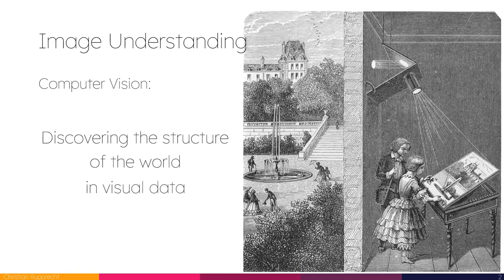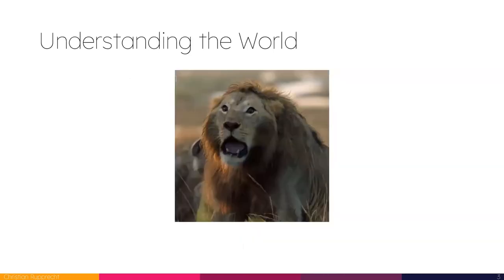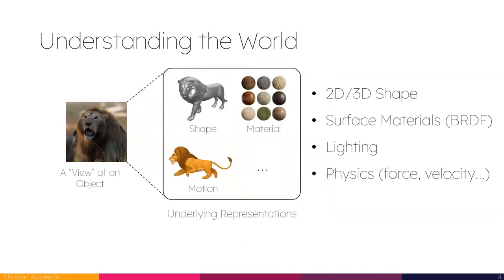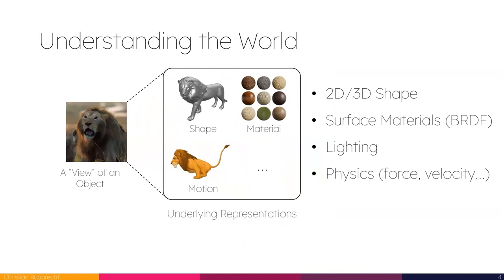One way this might look like is like this. We're looking at this image of a lion and from that image, we want to extract as much as possible about the world. That could be, for example, the shape, the material, the motion, lighting, physics, 2D segmentation — all sorts of underlying properties of this image and that scene that then come together to generate this image.